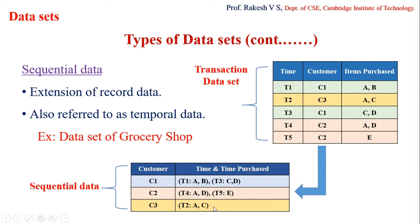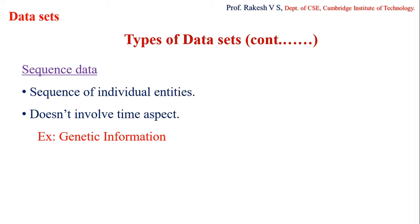Sequence data is a dataset where data appears as a sequence of individual entities. It looks similar to sequential data, but the key difference is that sequence data does not have a time element. Instead, the order in which entities are represented is what matters.